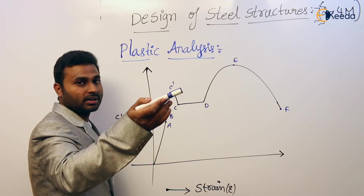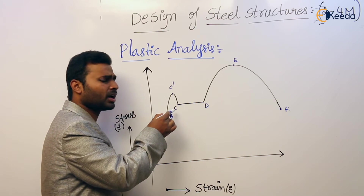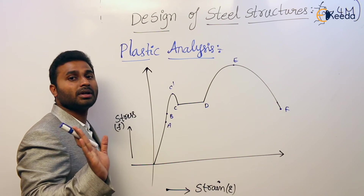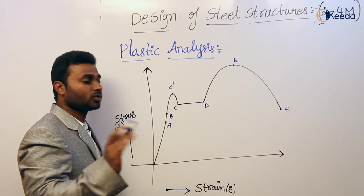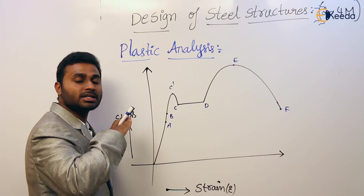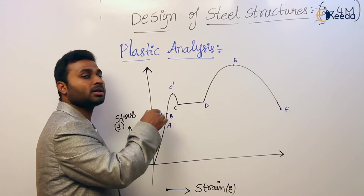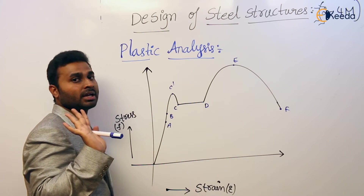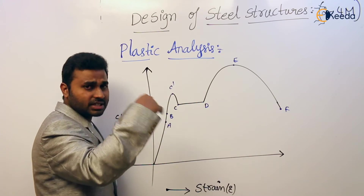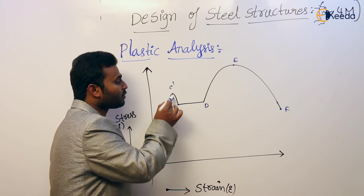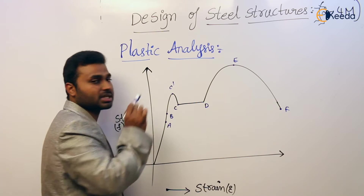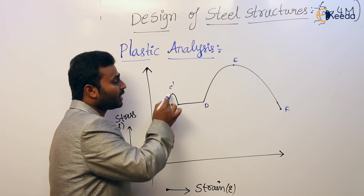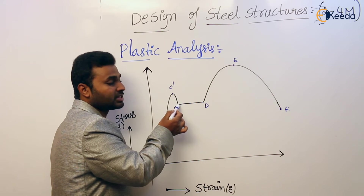If we increase the load further, the stress keeps increasing until it reaches a point where there is a sudden drop in stress. The point where this drop occurs is known as the upper yield point. Where the graph stabilizes after that drop is known as the lower yield point.